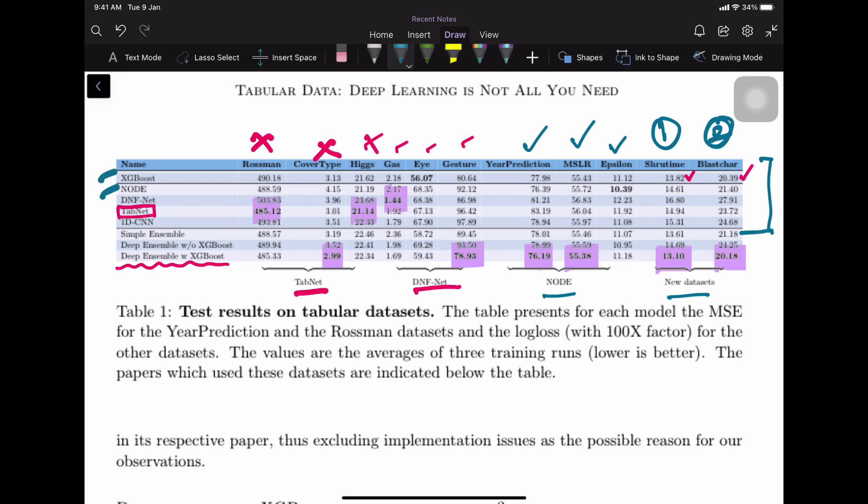You have got XGBoost, you have got NODE, you have got DNF, TabNet, 1D CNN. Within the deep learning models, you can actually see in this case NODE has done better, and in this case again NODE has done better. But if you compare overall—the lesser score is better—if you compare overall for both Shrutime and Blastchar, you would see that XGBoost has the best score: 13.82 and 20.39.